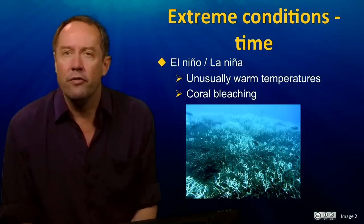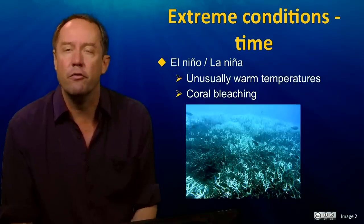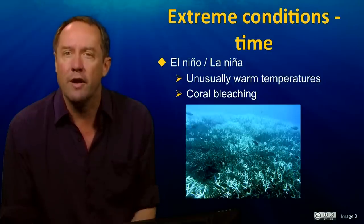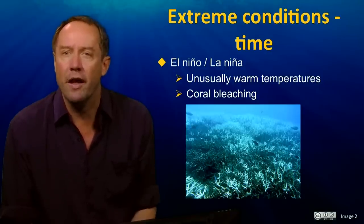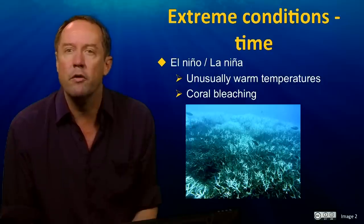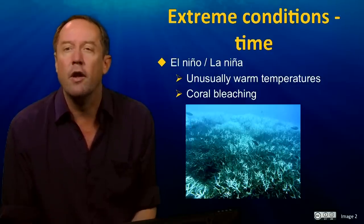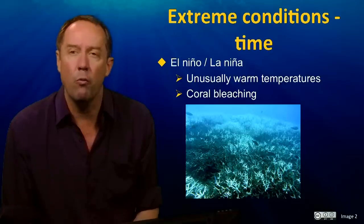There are several ways we can understand this impact. The first one is to look at particular extreme conditions over long periods of time. For example, we have long periods of warming during El Niño and cooler periods during La Niña in different parts of the world. These warmer periods can then cause impacts like coral bleaching that are telling us something about what it would be like if it's warmer in the future.